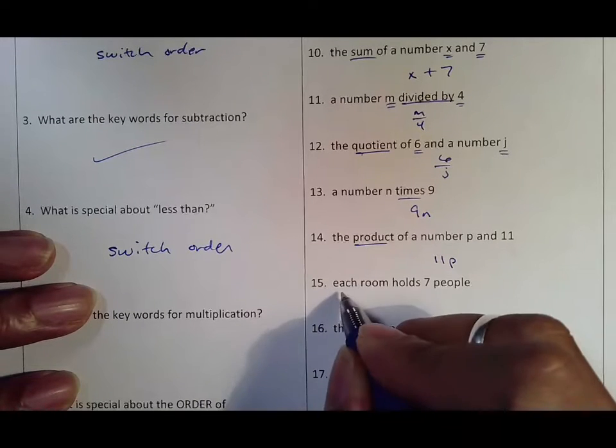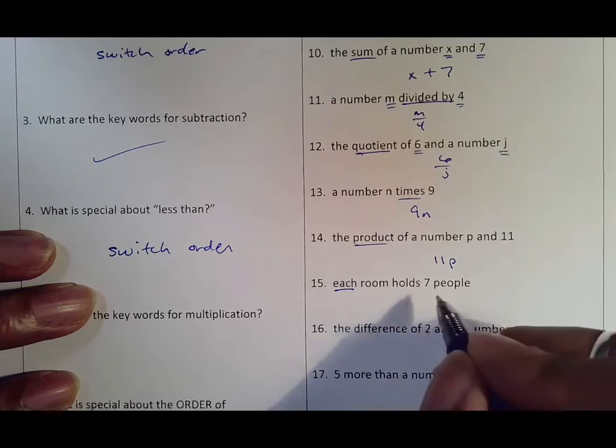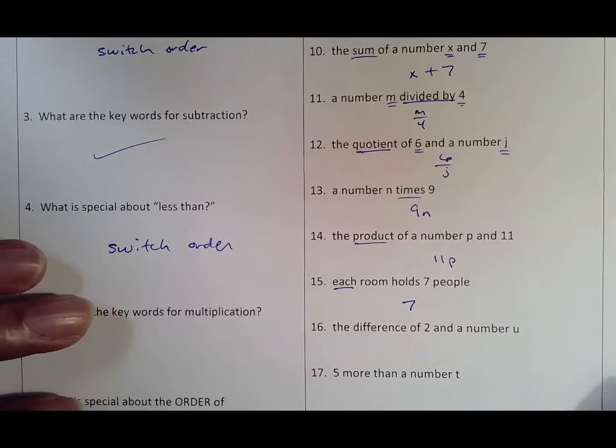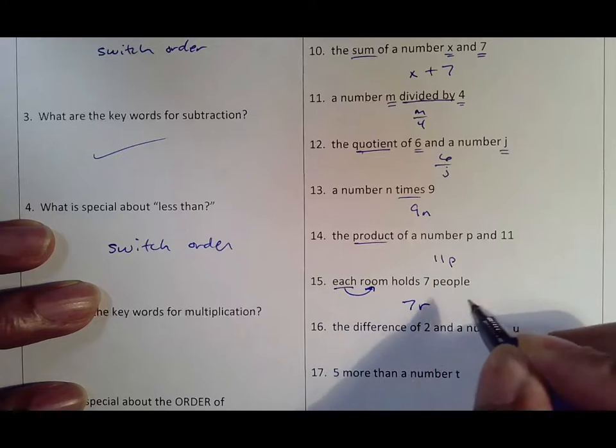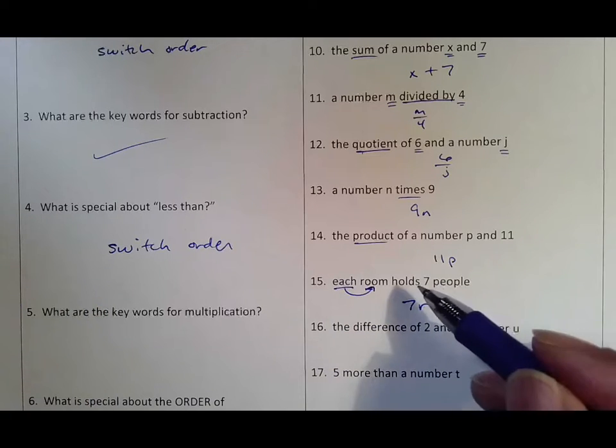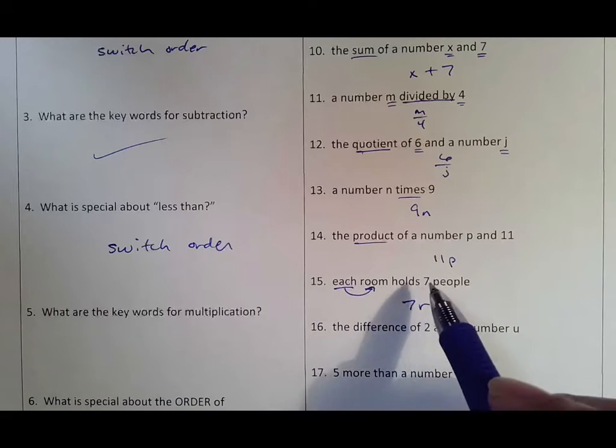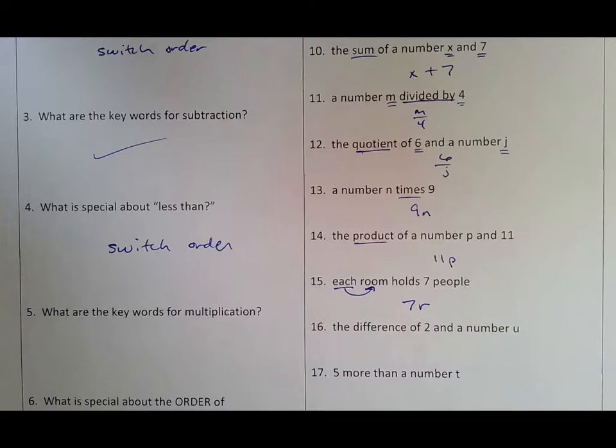Each room holds seven people. Each means multiply, so you're going to have seven times something. But remember with each, per, and every, you want to make sure you use a useful variable. So you say each what? We're talking about each room, so we're going to do 7r. Even though it says seven people, it's not 7p.